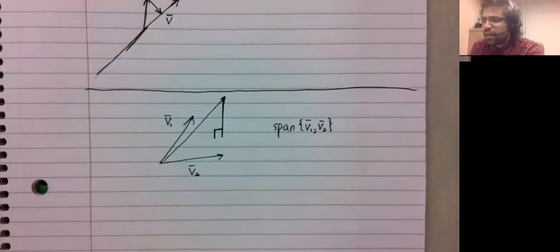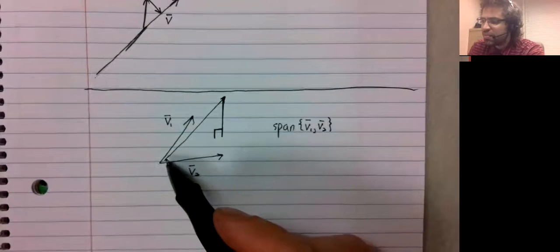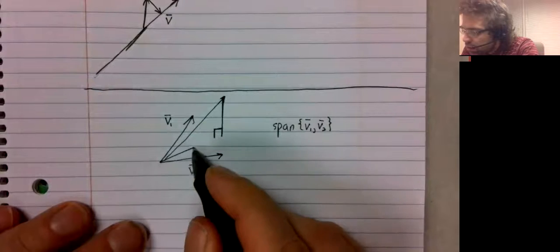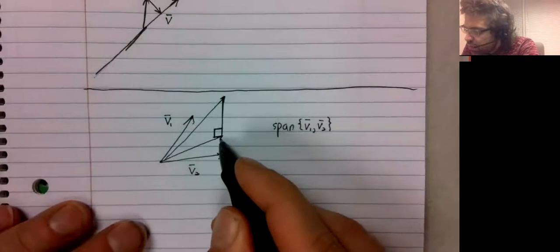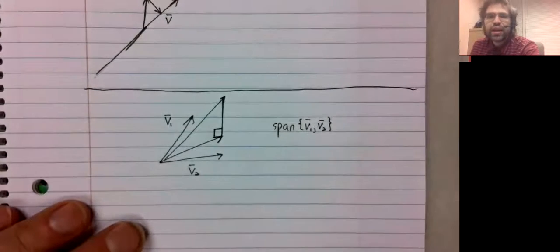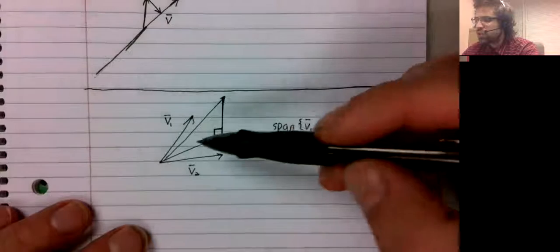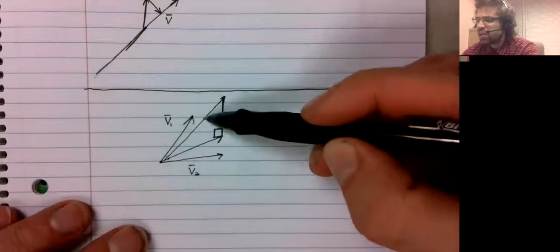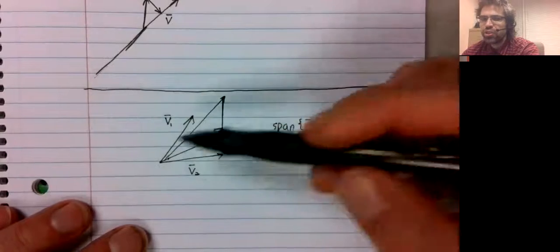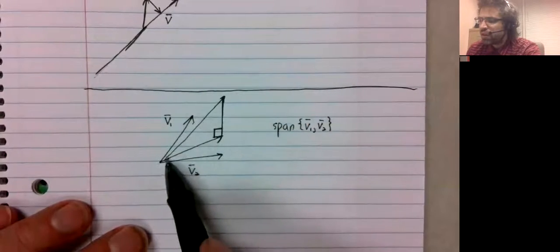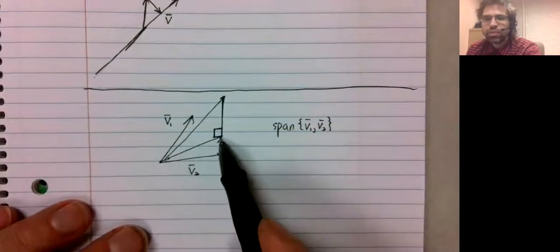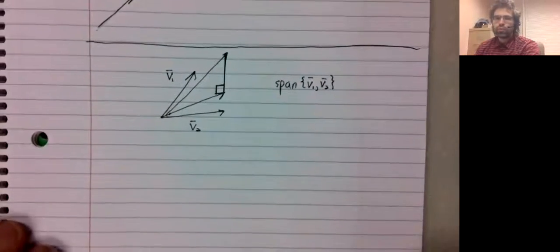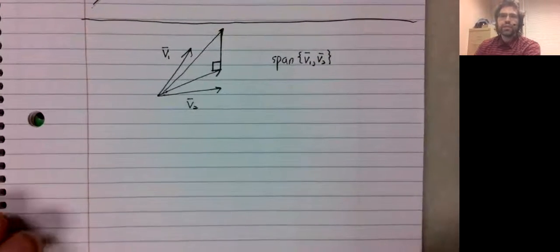So, the image is very similar. We have a vector. We project it down onto the plane, and we've written this vector as a linear combination of a vector in the plane and a vector orthogonal to the plane.